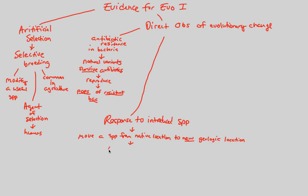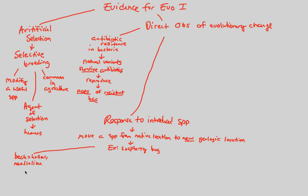The example we're going to look at is the soapberry bug — an insect that is an example seen today showing us evolution does happen. They have a beak that is hollow and needle-like in shape; really look at a picture of this. This bug has a beak — an extension that is hollow and needle-like — and it's really good at feeding on seeds.